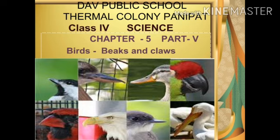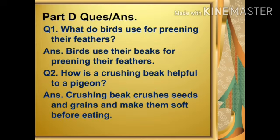For this you have to open a new page in your notebook and write CW, date, chapter 5, and name of the chapter. Then you have to write part D question answers. Then question number 1. You have to write questions with a black ballpoint pen and answers with a blue gel pen.